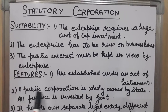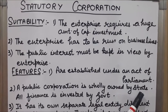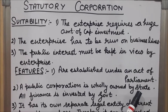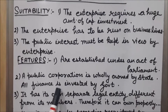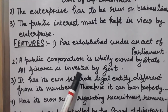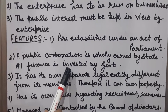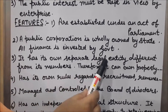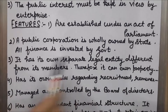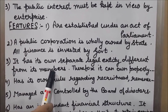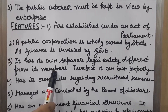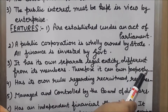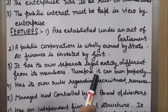The second feature is that a public corporation is wholly owned by the state, meaning the government. Public corporations are completely owned by the government; all finances are invested by the government, and whatever profit is earned or losses are suffered, all goes to the government. The third feature is that it has its own separate legal entity, different from its members. Statutory corporations can own property, enter into contracts, and file cases against others in their own name.